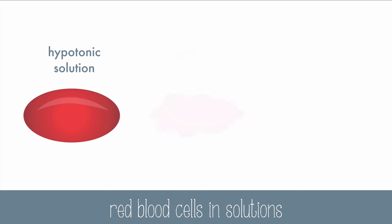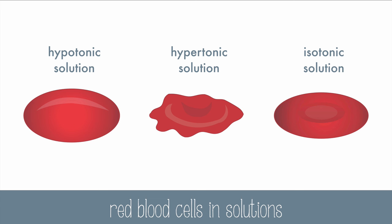If the cell is placed into a hypertonic solution, water will rush out of the cell and cause it to shrivel up. In an isotonic solution, water moves in and out at equal amounts, and the cell maintains its normal concave shape.